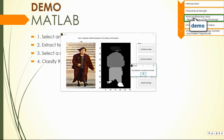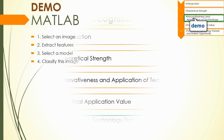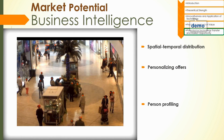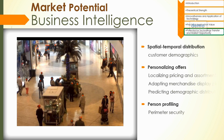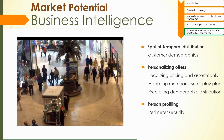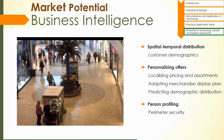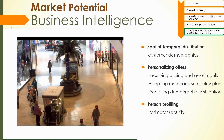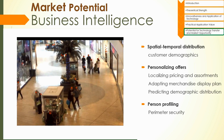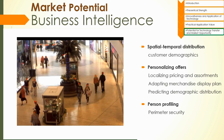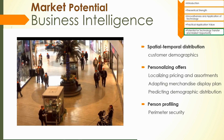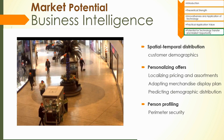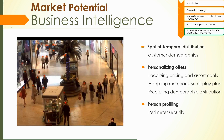How will this system be scaled into real life? The market potential of such an attribute recognition system can be seen in business intelligence. Almost all department stores and shopping malls are equipped with surveillance cameras, providing ample data to analyze the spatial-temporal distribution of people. Without a need for human supervision, retailers like Walmart could make better decisions in personalizing offers, localizing pricing assortments, and adapting merchandise display plans. Also, personal profiling can be performed in a less intrusive and inexpensive manner, and perimeter security is hence ensured.